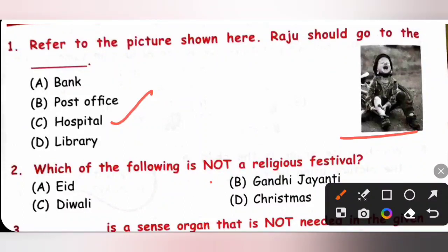Second one. Which of the following is not a religious festival? So, Eid, Diwali and Christmas are religious festivals. Gandhi Jayanti is not a religious festival. It is a national festival. So, option B is the correct answer.